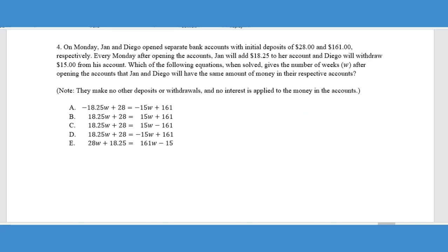Again, we have for problem number four another translation problem that we are trying to set up an equation that represents this scenario in the problem. Now, interestingly enough, you could probably figure this out without writing anything down, but I'm going to kind of write some stuff down just to kind of show you the thought processes that I would go through in my brain. So it says on Monday, Jan and Diego open separate bank accounts with initial deposits of $28 and $161 respectively. Now I'm going to just kind of give me a visual here. Okay.